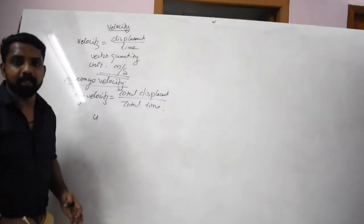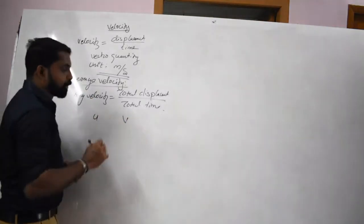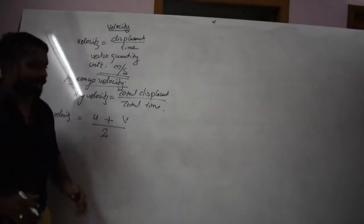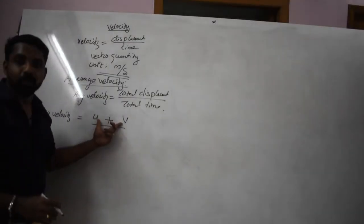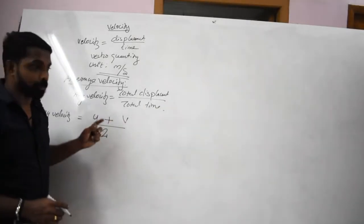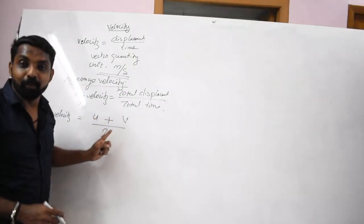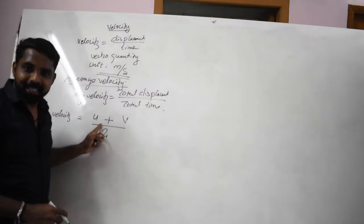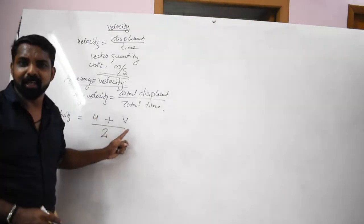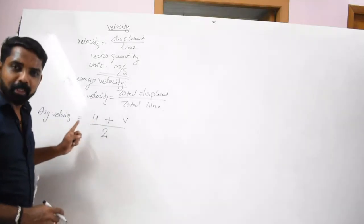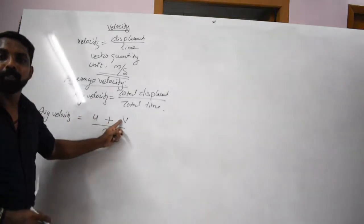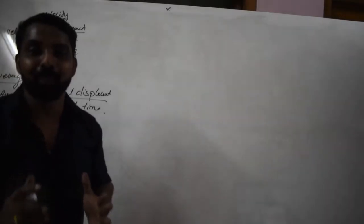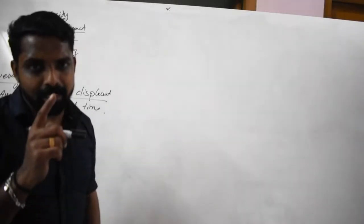Average velocity is total displacement by total time. This unit is meter per second. Initial velocity plus final velocity divided by 2 equals average velocity. Speed is equal to meter per second.